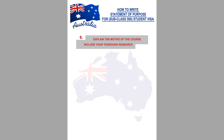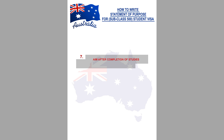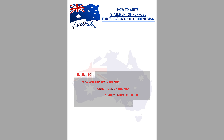On the sixth paragraph, do thorough research on the course you'll be pursuing and mention the details as outlined in point number six above. The seventh paragraph covers point number seven, and the last paragraph covers points number eight, nine, and ten.